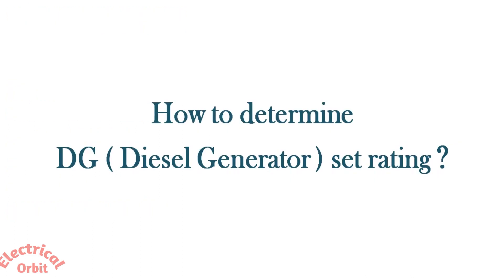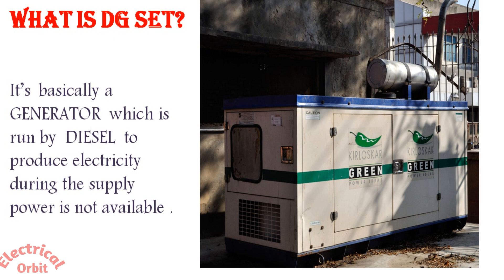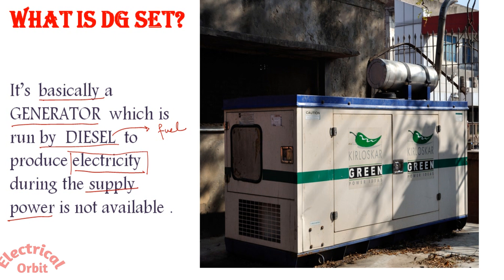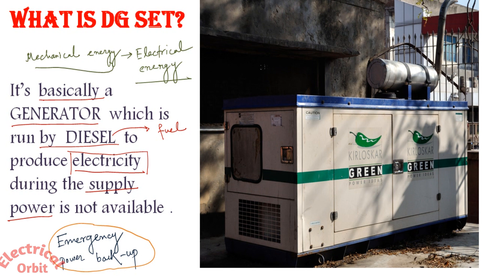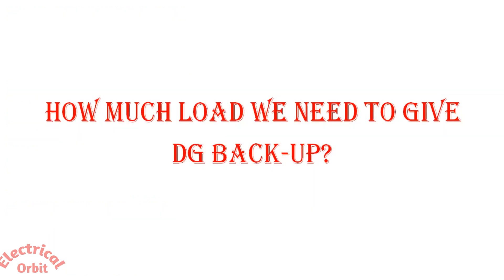In this lecture, we are going to understand how to determine DG or diesel generator set rating. A DG is basically a generator run by diesel fuel for producing electricity when power supply is not available — that means it is an emergency power backup, providing power by converting mechanical energy to electrical energy.